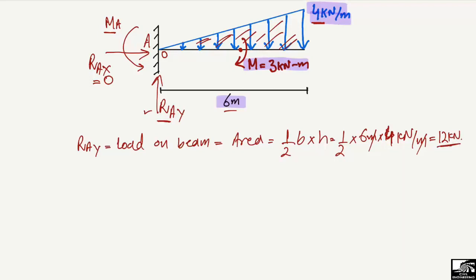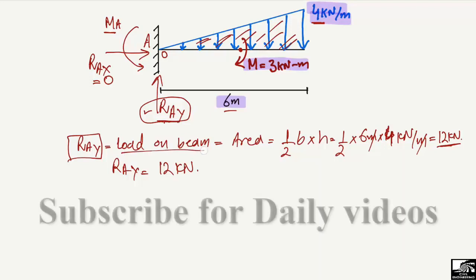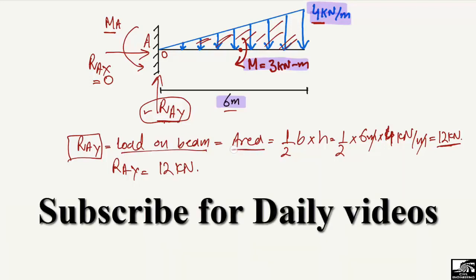So RAY is equal to 12 kilonewtons, because RAY is the only vertical support reaction provided to this beam. It is equal to the total load acting on the beam, which we found to be equal to the area of the load diagram: 12 kilonewtons.